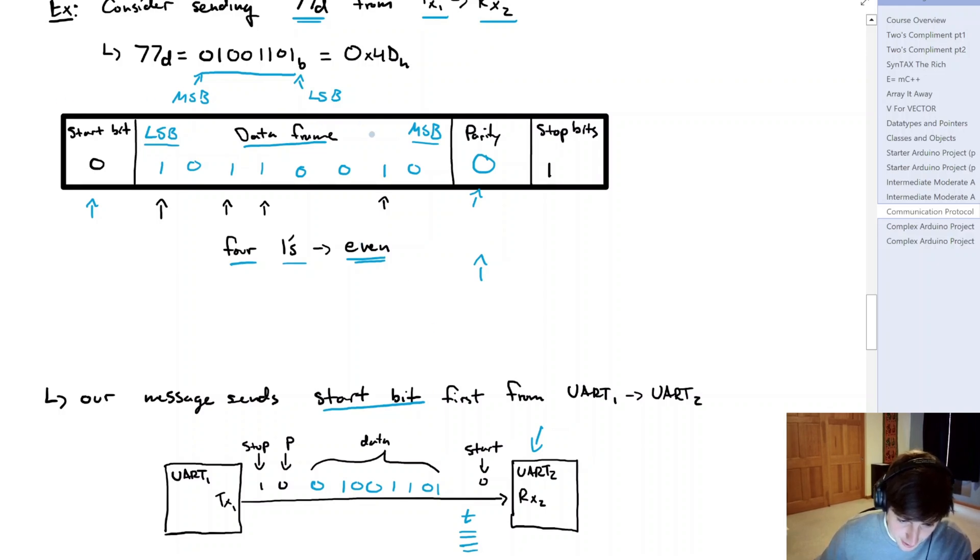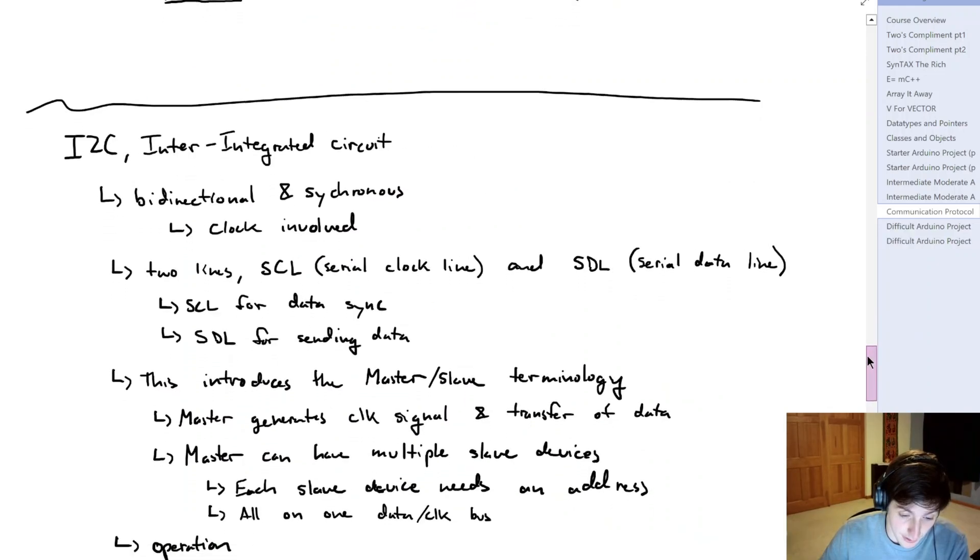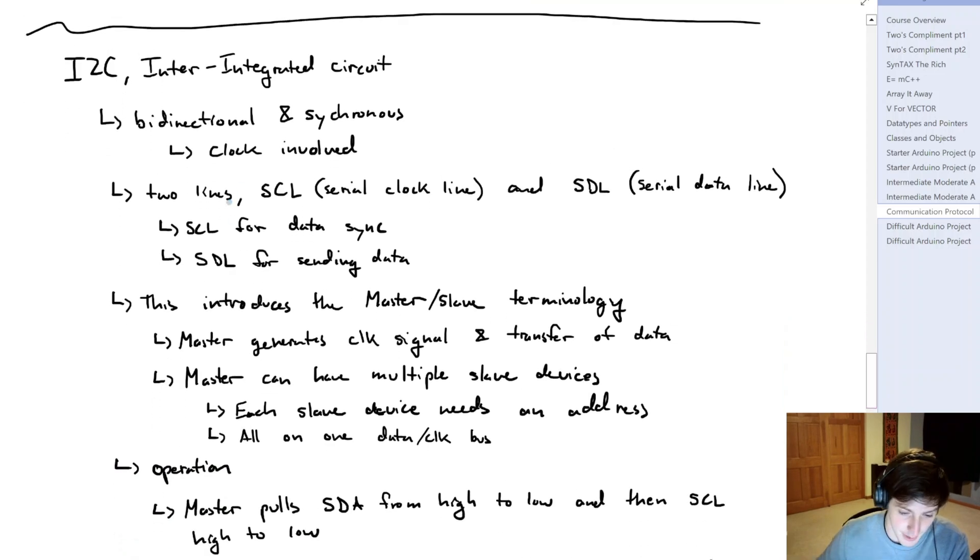So we can look into the I2C, which stands for Inter Integrated Circuit. And this works pretty much on a different principle completely. So we have bi-directional communication, but this time it is synchronous. So we know that there is a clock that's going to be heavily involved. We have two lines: the SCL line, which stands for Serial Clock Line, and an SDL line, which is Serial Data Line.